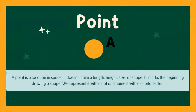Now the first one that you should know is a point. A point is really easy to remember because it's just a location in space. A point can be anywhere. It doesn't have a length or a height, doesn't have a size or a shape. Essentially a point just marks the beginning drawing of a shape. We represent it with a dot and we name it with a capital letter. It can be any capital letter you want, as long as that one hasn't been used before. So in this example you can see on the screen, we have point A.